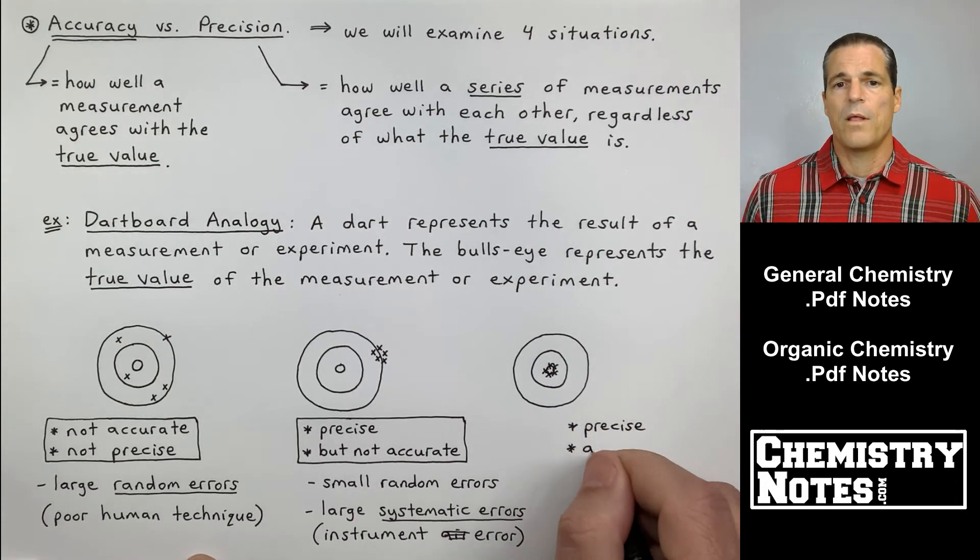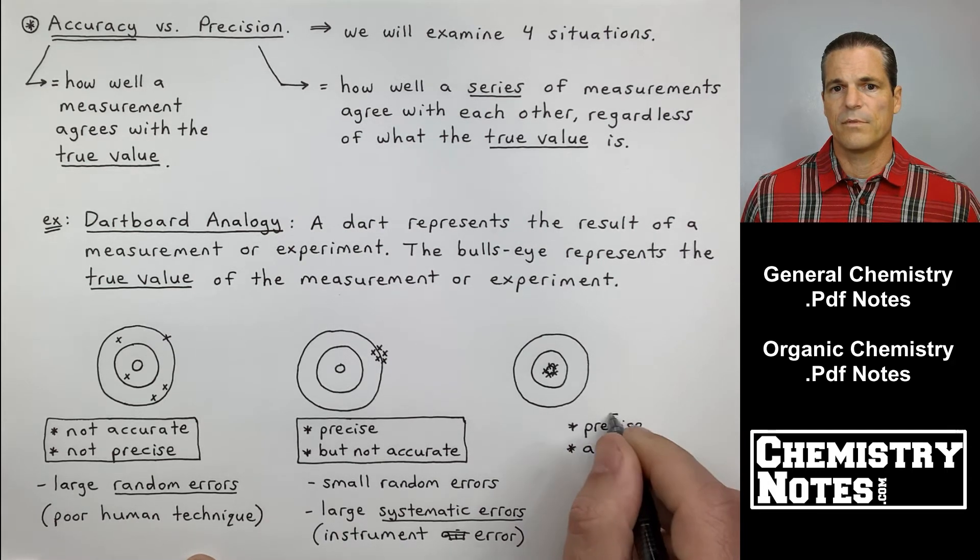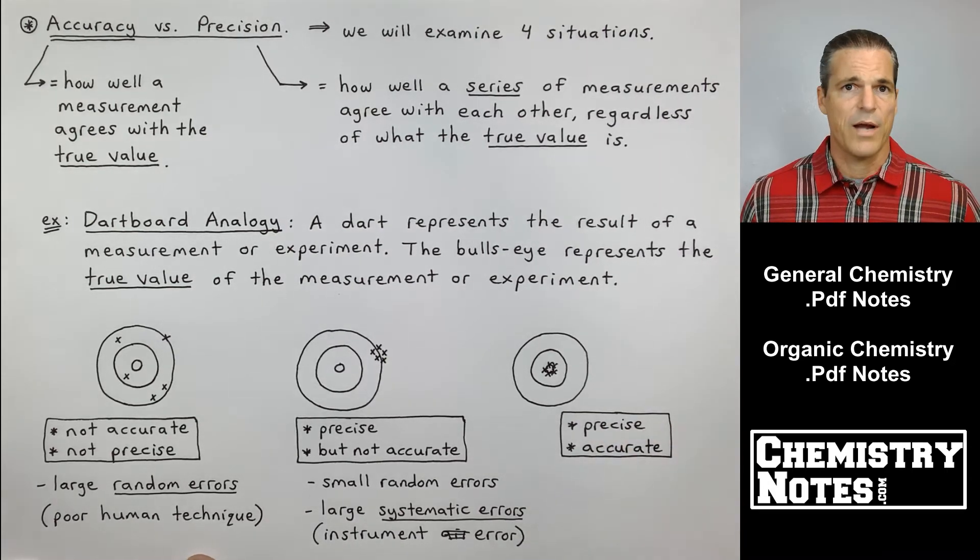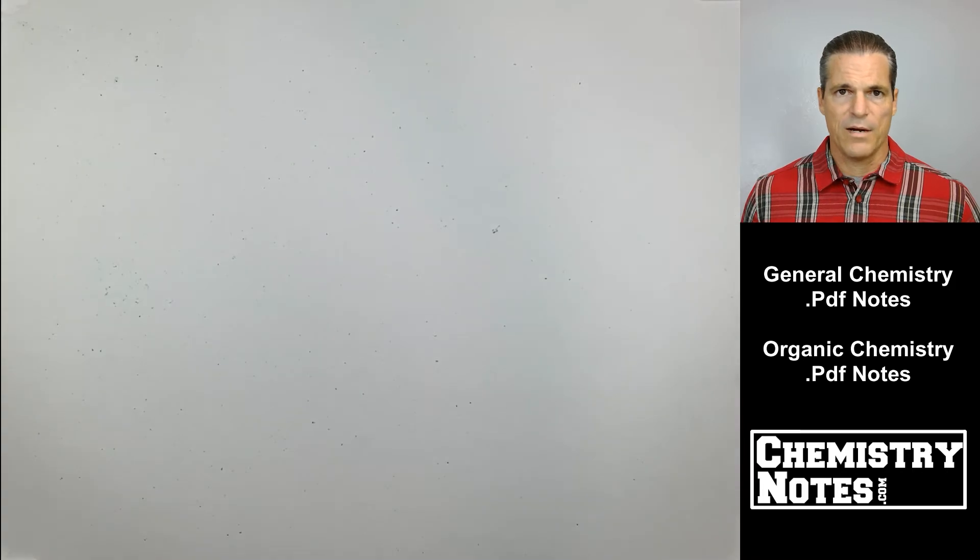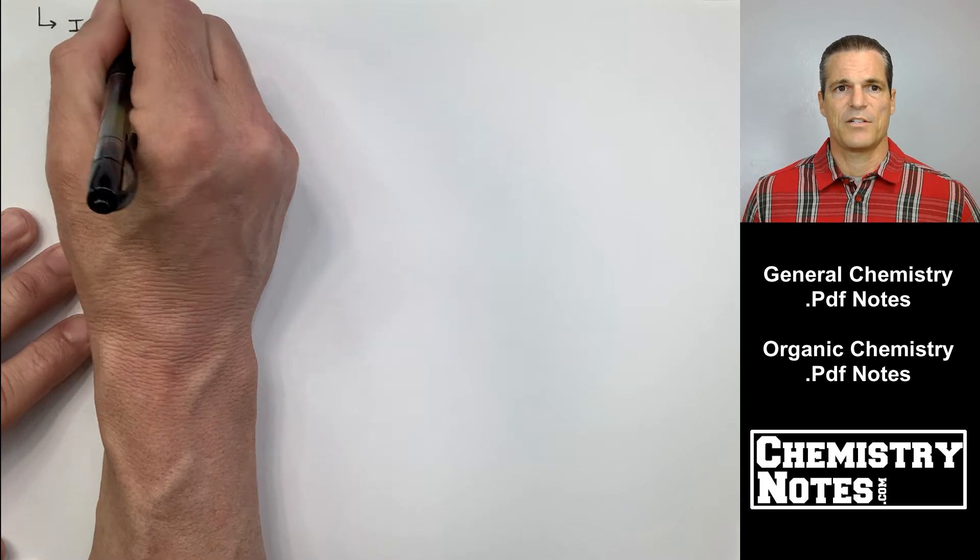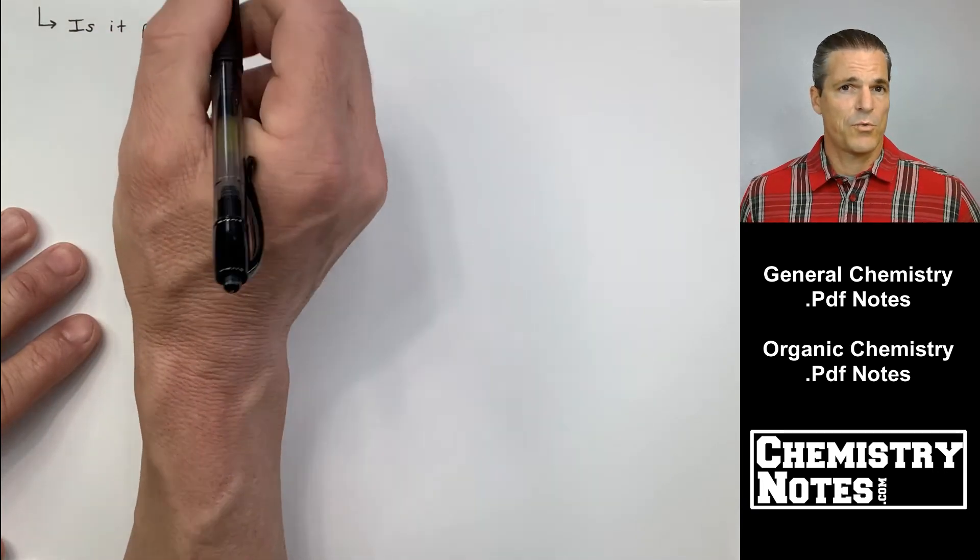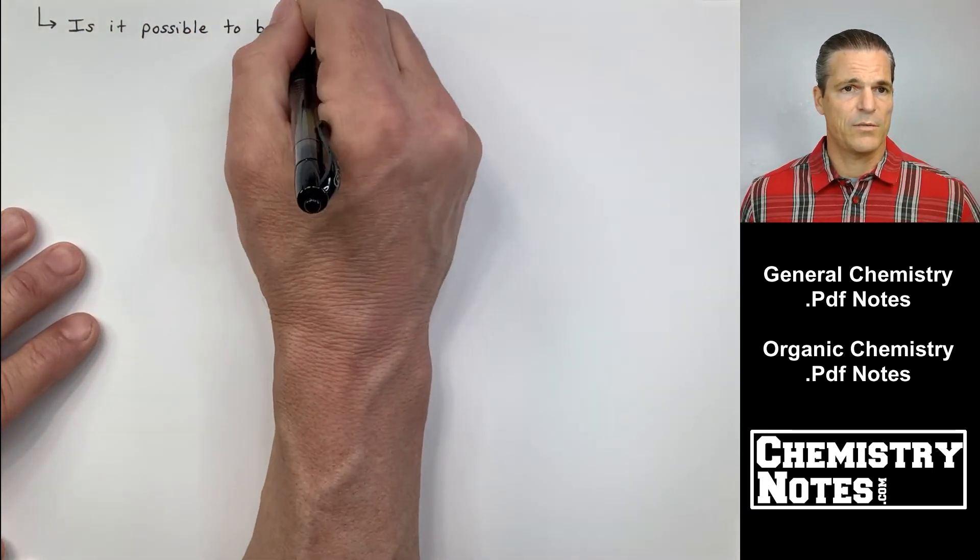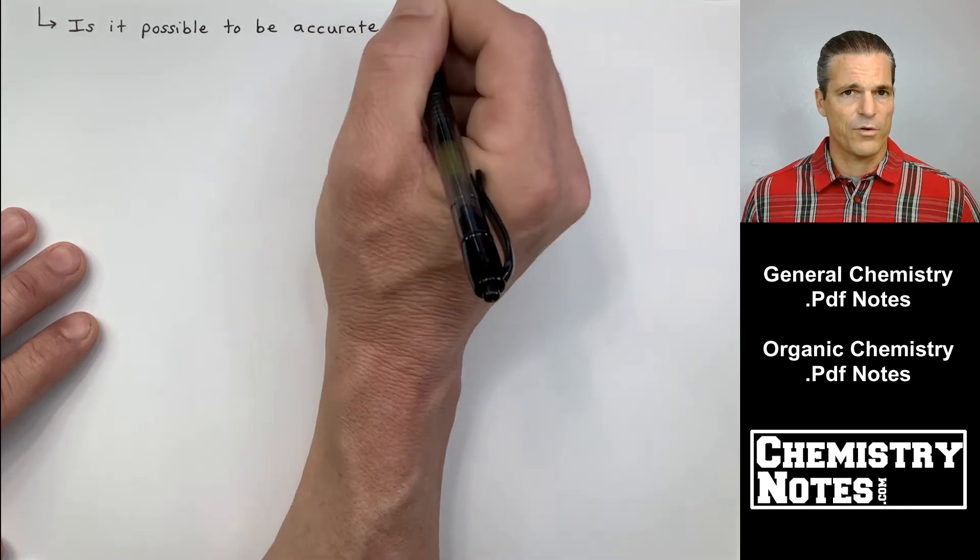Now look at the one on the far right. It's very obvious. We're precise, we're accurate. We've got no human error, no random error. And then we also have no systematic error, no instrumentation error. Now I told you we'd be doing four analogies. We've only seen three. Here comes the fourth one.